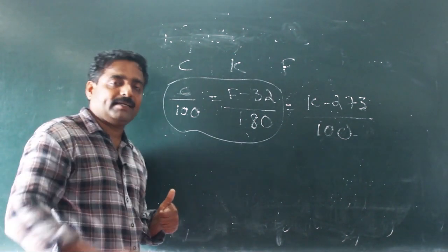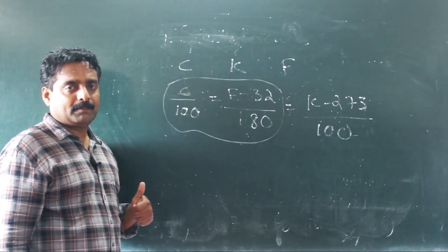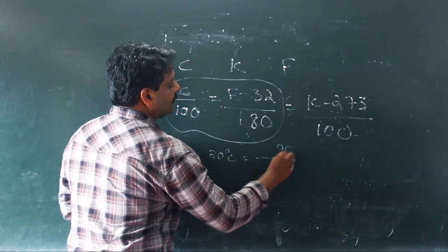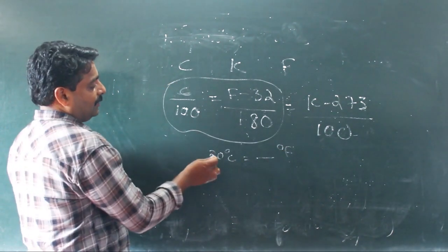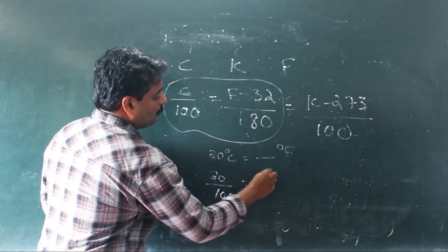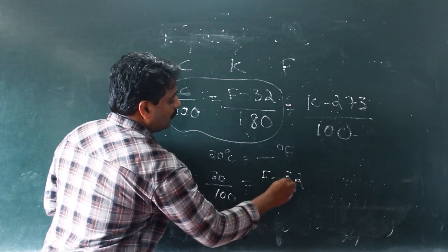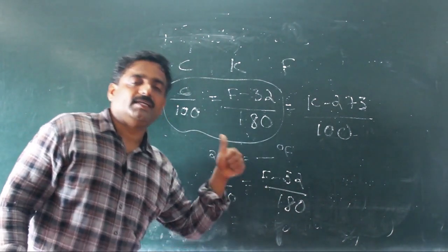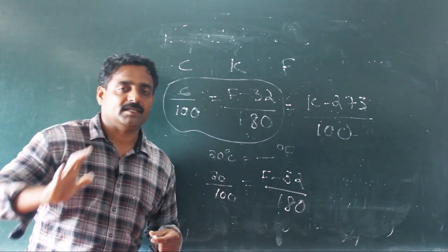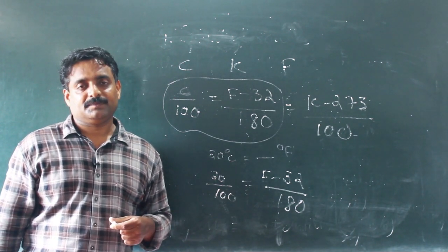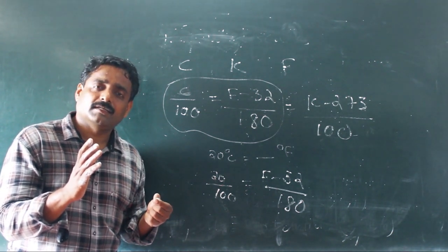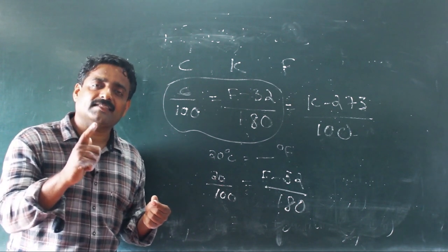The relation between Celsius scale and Fahrenheit scale. For example, 20 degree Celsius: 20 divided by 100 equals F minus 32. In a particular value of temperature, Celsius scale and Fahrenheit scale are the same. That value is minus 40. So, Celsius equals F minus 32, giving C as minus 40.